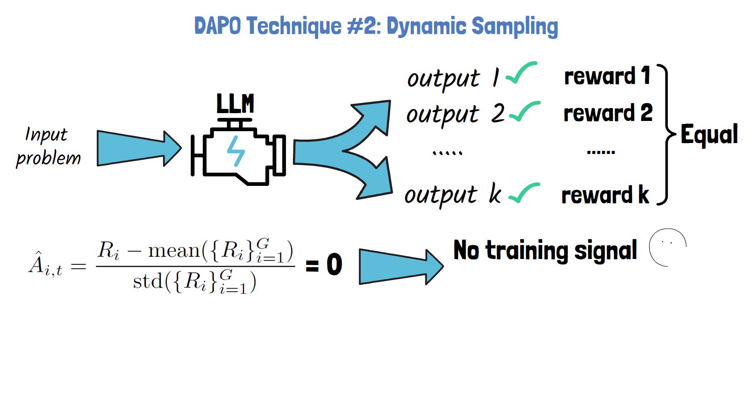As training progresses and the model gets stronger, this scenario becomes more common, since the model solves more questions correctly across all sampled solutions. This means that effective batch size is reduced. Each training step is impacted only by the questions that are not consistently solved, which creates a smaller than intended effective batch. This reduces the training signals and can lead to larger variance.